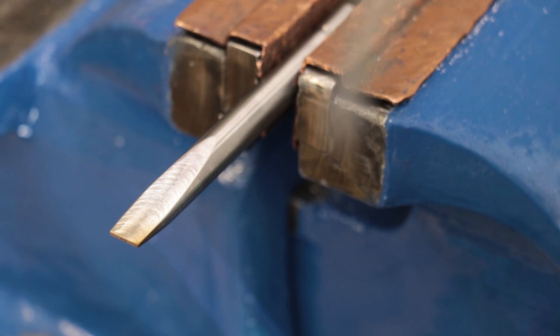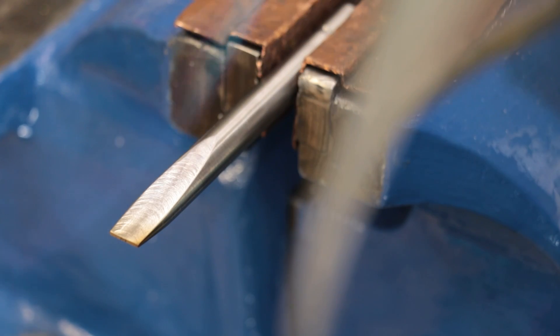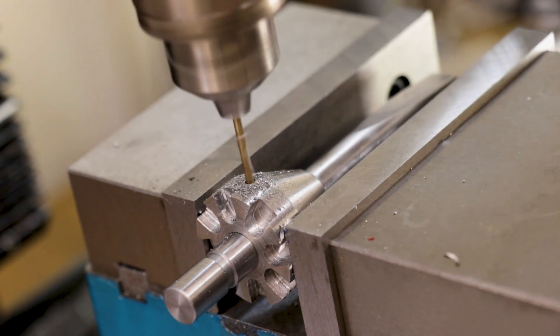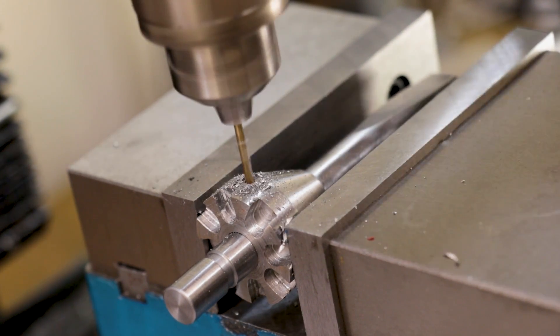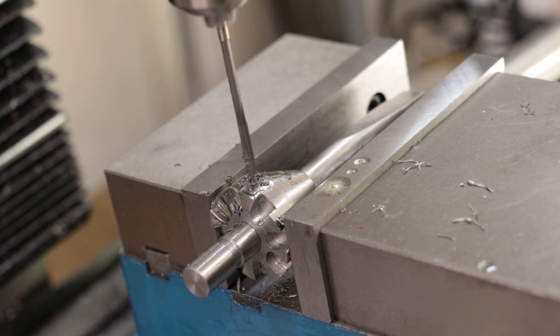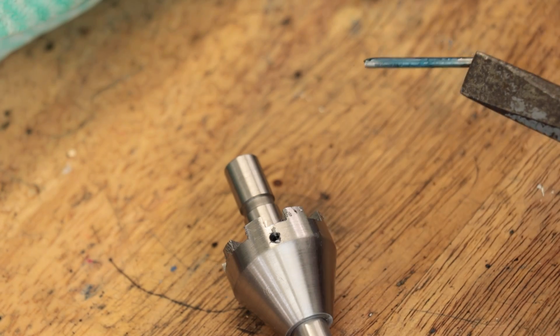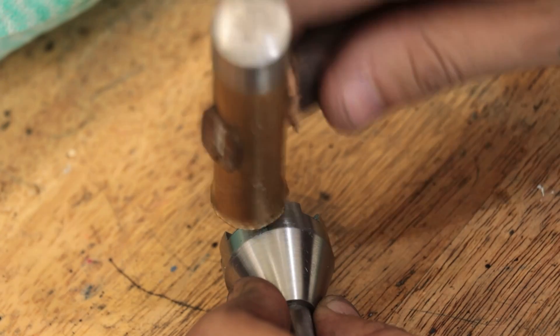And the final thing that I'll do is drill a hole through the front and the shaft and then I'll ream it to size. The hole is for a pin which will fix the shaft to the ratchet mechanism.